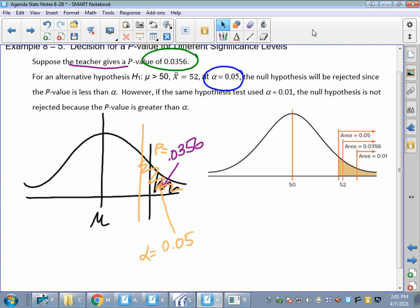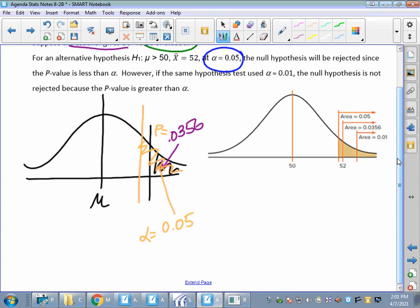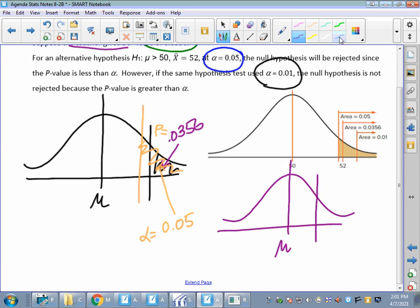However, if the same hypothesis test used alpha equals 0.01, so let me draw this again. Here's my mu at the middle, 50, 52. My p-value is still 0.0356. But now I'm going to switch up alpha equals 0.01. Well, 0.01 is a smaller area, right? That would have to be something like this. Alpha equals 0.01. That's a smaller area.